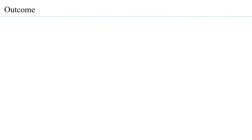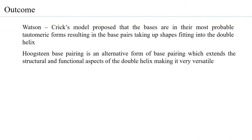In Watson and Crick's model, bases are present in their most probable tautomeric form, forming base pairs that fit into the double helix. Most DNA exists with Watson-Crick base pairing prevalent over non-canonical forms. However, one cannot deny that non-canonical base pairing also exists. Hoogstein base pairing is an alternative form that extends the structural and functional aspects of the double helix, making it more versatile.